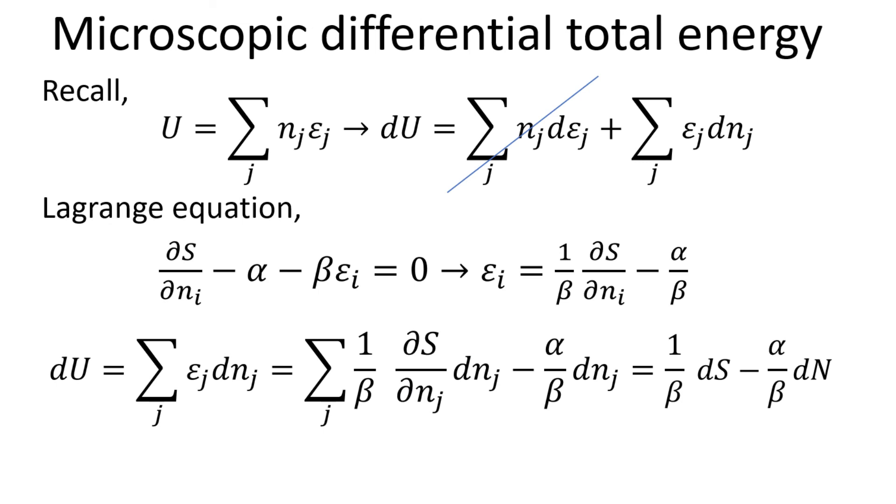The way to determine the constants alpha and beta is to compare our microscopic expression of the total energy with that of the thermodynamic law. We begin with our microscopic definition of the total energy of the system and express the total energy U in terms of its differential form. Since we are only interested in the variation of N, we can eliminate the first term. We also recall our Lagrange multiplier equation, and obtain an expression for the energy level. Substituting this into the differential of U expression, we obtained a new expression for the differential U in terms of the differential of entropy S and total particles number N.